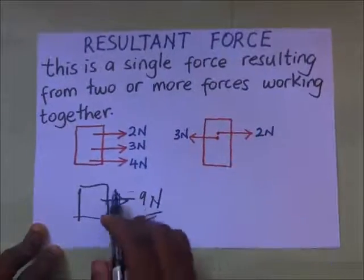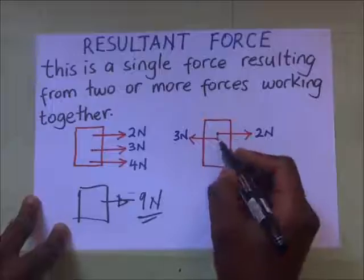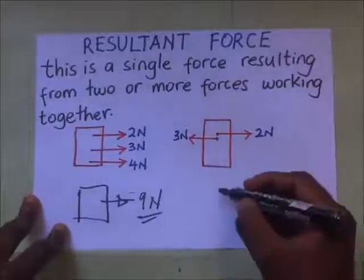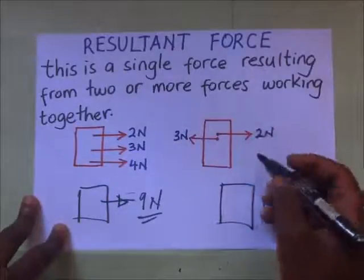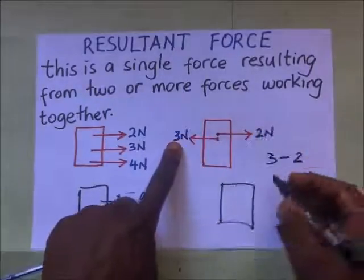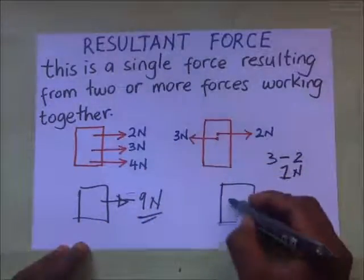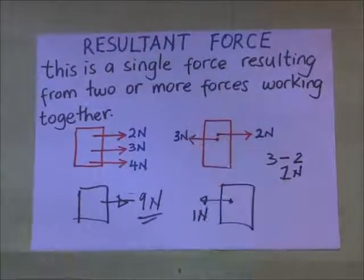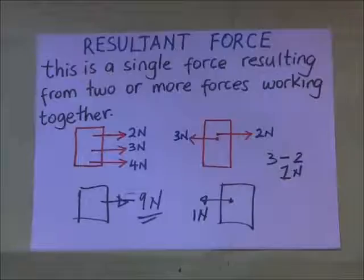This 9 newtons becomes the resultant force. Likewise, consider a body with 2 newtons acting in one direction and 3 newtons acting in the opposite direction. The force that is going to overpower is the 3 newton force. So the resultant is 3 minus 2, which gives us 1 newton. The resultant force acting on this body is 1 newton, acting in the direction of the 3 newton force.